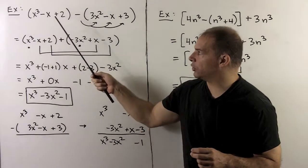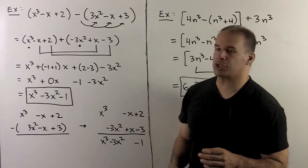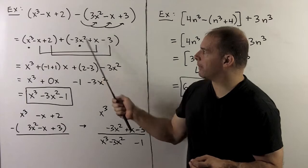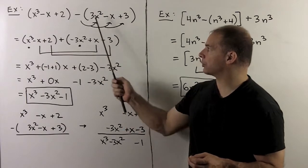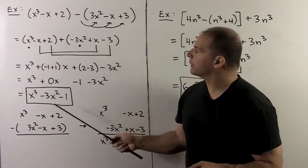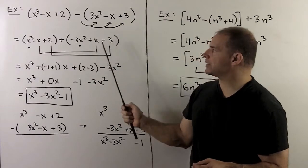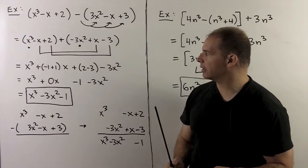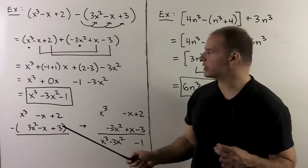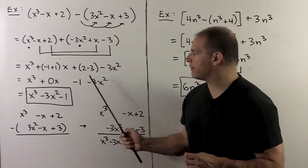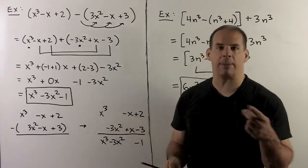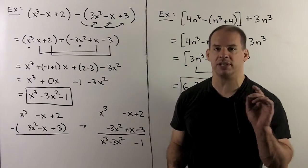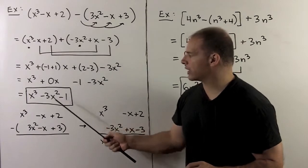Let's try this one: x cubed minus x plus 2, minus the quantity 3x squared minus x plus 3. We distribute the minus sign, giving minus 3x squared plus x minus 3. Then we add as before: x cubed is by itself; minus x goes with plus x giving 0x; 2 goes with minus 3 giving minus 1; and minus 3x squared is by itself. We get x cubed plus 0x minus 1 minus 3x squared. Since 0x drops out and we write in descending order, the final answer is x cubed minus 3x squared minus 1.